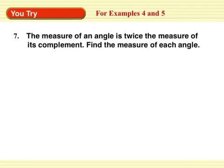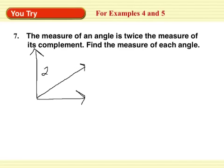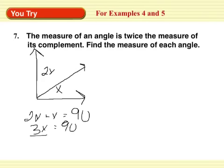The measure of an angle is twice the measure of its complement. Find the measure of each angle. Complementary angles sum to 90 degrees. I need two angles next to each other — the measure of one angle is twice the measure of the other. So find the measure of each angle: solve for x first. 2x plus x equals 90 degrees. 3x equals 90. So this angle is 30 degrees, this angle is 2 times that, or 60 degrees. There are your two answers.